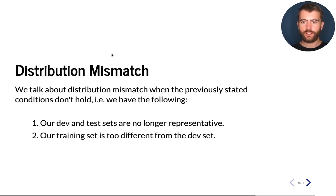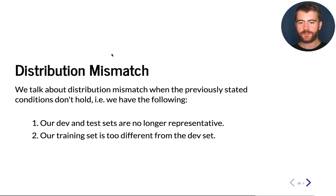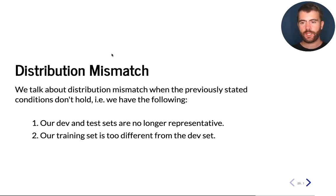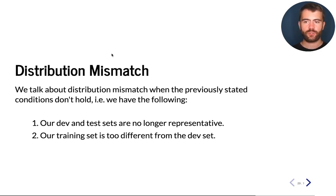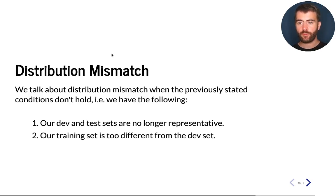So when these distributions are not met — for example, when the development set or the test set is no longer representative of our true data distribution, or when the training set that we have chosen is too different from the development set and we have added images which are no longer useful for our ultimate task of classifying dogs versus cats —